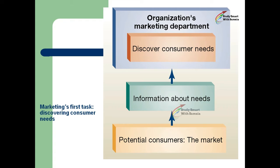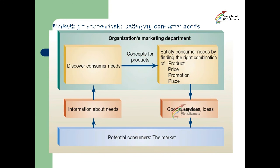The organization's marketing department discovers consumer needs. Information about the needs of potential customers defines the market. Marketing's first task is discovering those consumer needs, moving from the bottom to the top of the organizational hierarchy. The department then satisfies consumer needs by finding the right combination of product, price, promotion, and place — delivering goods, services, and ideas.